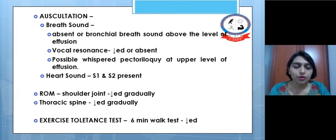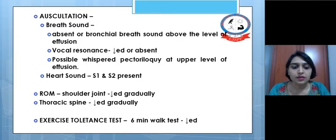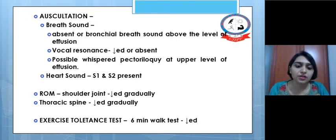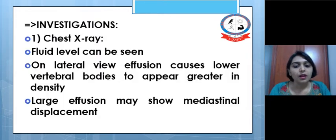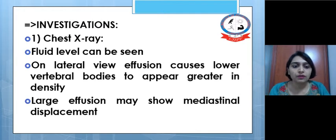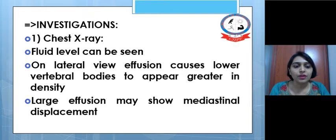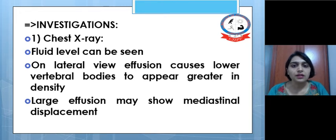Range of motion of the shoulder and thoracic spine reduces gradually. For exercise tolerance testing, the 6-minute walk test will show reduced tolerance in the patient. On investigation, a chest X-ray may show a fluid level. On lateral view, the effusion causes lower vertebral bodies to appear greater in density, and a large effusion may show mediastinal displacement.